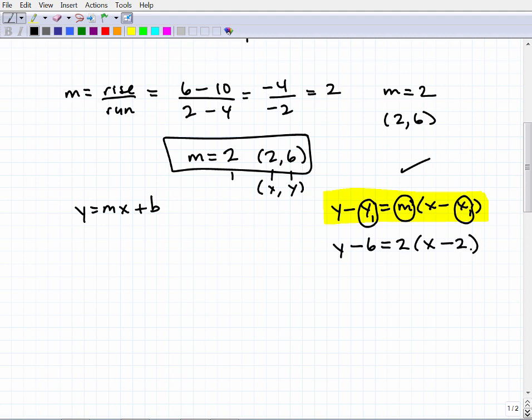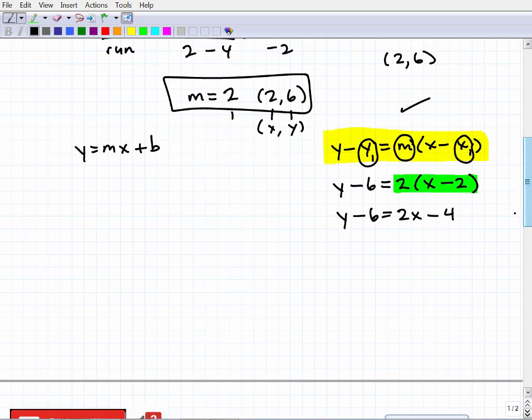Now we're going to put this equation in slope intercept form. What you do is always do the distributor property first here. So this is going to be y minus 6 equals 2x minus 4. Now all I got to do is add 6 to both sides of the equation, and I get y equals 2x plus 2, and this is your answer.